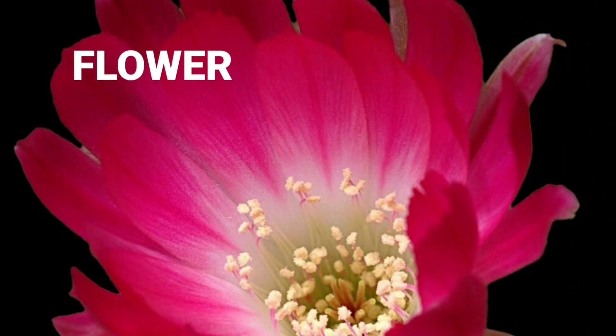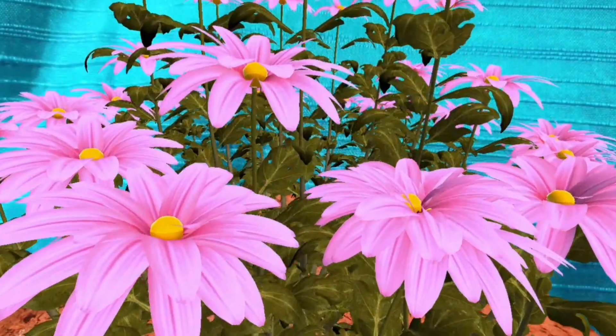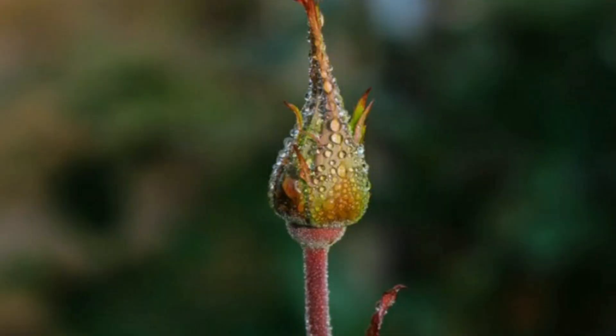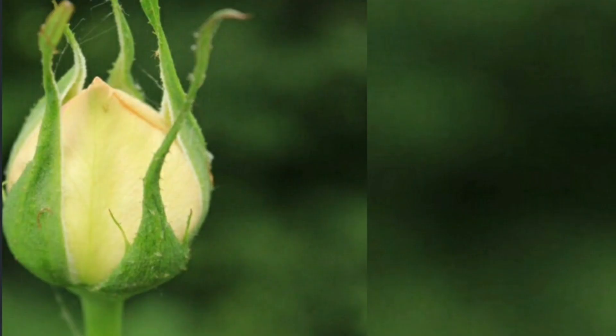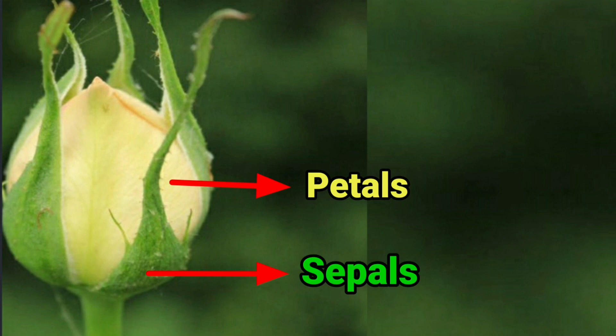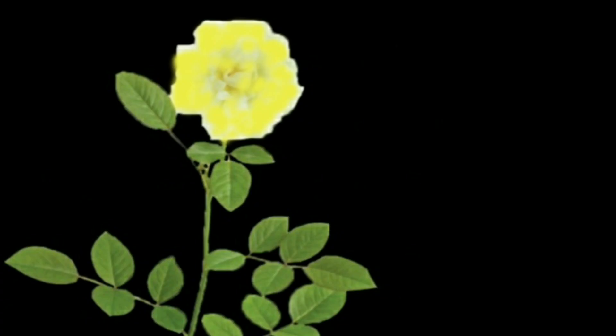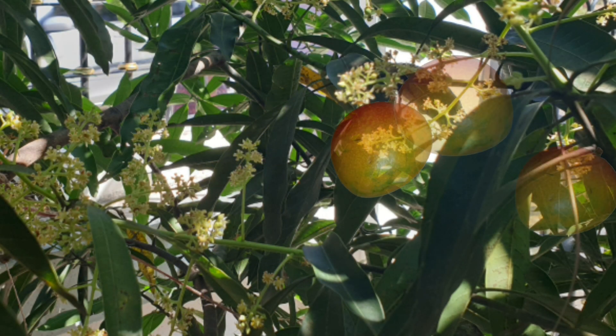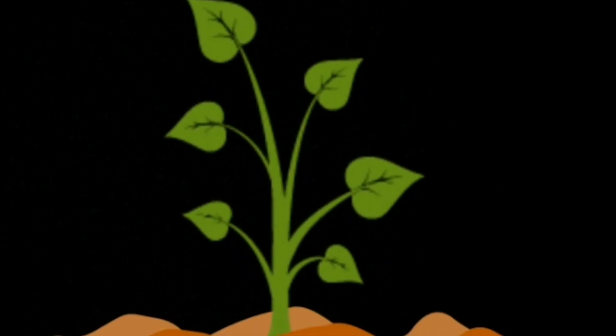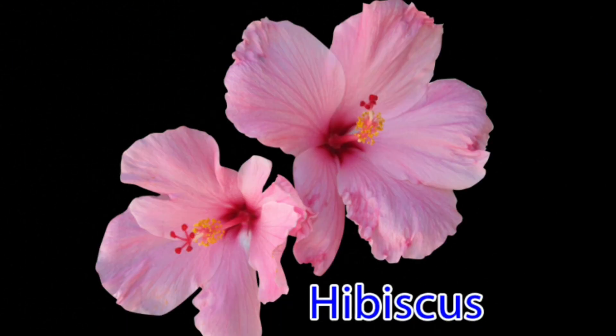Flowers are the most beautiful part of a plant. They usually grow at the end of the stem. Flowers first appear as buds on the stem. In a bud, the petals are close together and sepals surround the petals. Gradually, the bud grows in size and the petals open into a beautiful flower. Flowers develop into fruits. Fruits contain seeds. Seeds produce new plants. So, flowers are the reproductive organs of a plant.